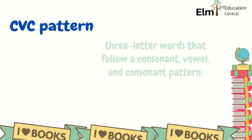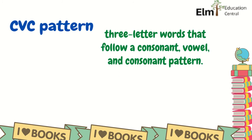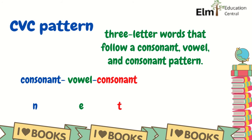So what is a CVC pattern? This is a 3-letter word that follows a consonant, vowel, and consonant pattern. So what are the vowels? We have A, E, I, O, and U. And the rest of the alphabet, we call them the consonants. For example, N as a consonant, E as the vowel, and C as another consonant. So this is a CVC pattern.